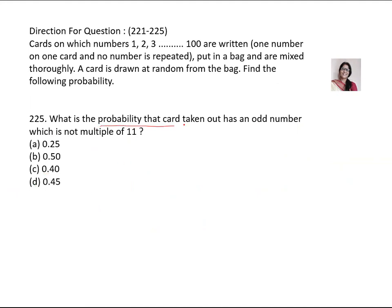What is the probability that card taken out has an odd number which is not multiple of 11? So how many odd numbers were there total? It was 50. Now it is not multiple of 11. So subtract the multiples of 11. 11 multiple, first is 11, then 22 but 22 is not odd. Next we will go for 11 times 3, 33. Next 44 is not odd.